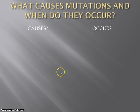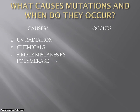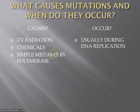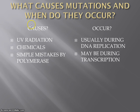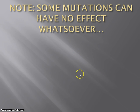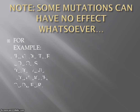So what would cause these mutations? They are random — how often do they occur? We can see there are environmental causes. There may simply be mistakes by enzymes, although luckily they do have the ability to proofread and cut out those mistakes. Usually this occurs during DNA replication, and as we said, sometimes during transcription. And we do have to remember, we can be lucky as well, because sometimes mutations, as we saw, can have no effect.